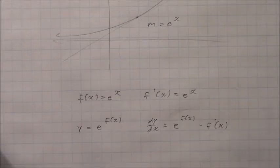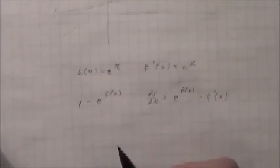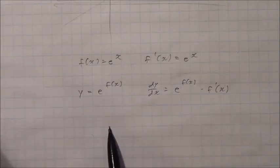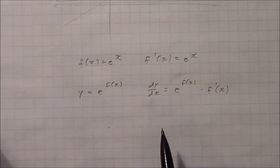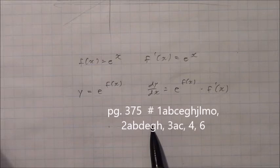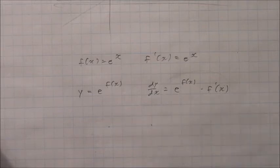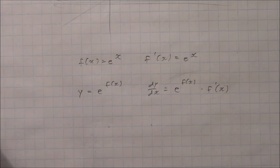We're going to look at some examples next lesson. In the meantime, please look at examples 9 and 10 on page 374, followed by questions 1 (a, b, c, e, g, h, j, l, m, o), 2 (a, b, d, e, g, h), 3 (a, c), 4, and 6 on page 375. That was a little explanation on 15e about derivatives of exponential functions using the value of e. Thanks for watching, and we'll see you in class.